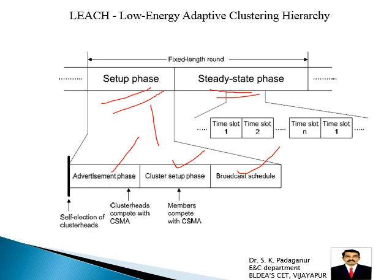LEACH has many important aspects, including how cluster heads are selected. There are many parameters that decide which node becomes the cluster head. One key parameter is energy: if a node's energy is very high, it can become the cluster head. Many other parameters also decide who becomes the cluster head for a particular cluster.